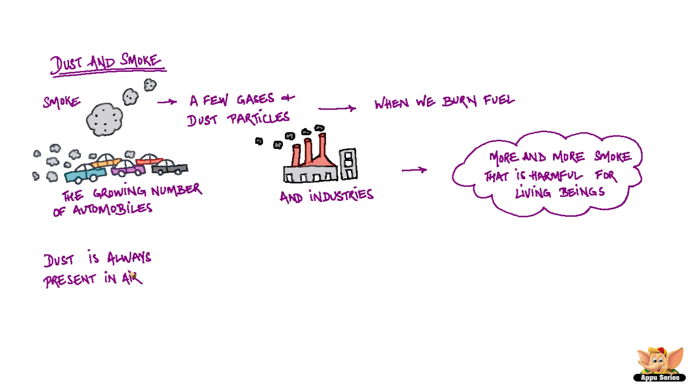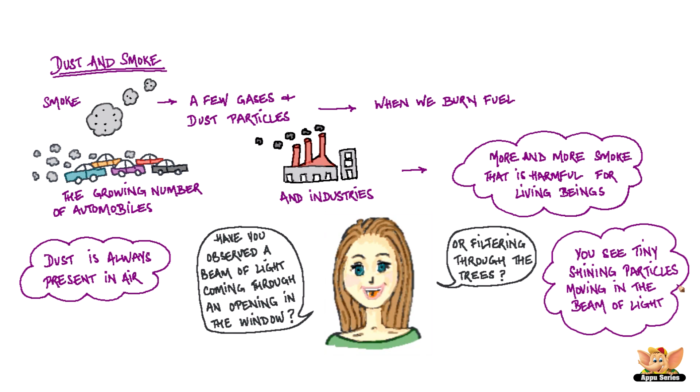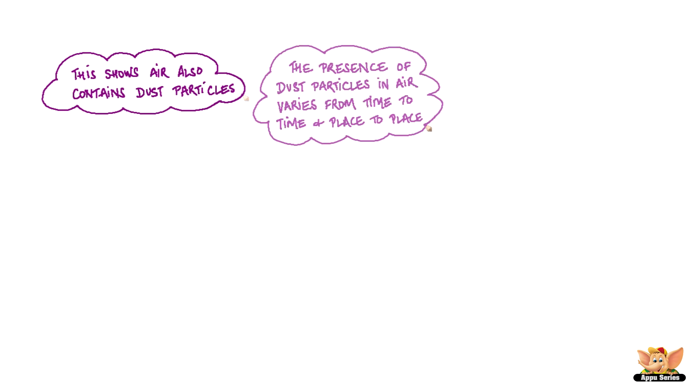Dust is always present in air. Have you observed a beam of light coming in through a small opening in the window? Or beams of light filtering through the trees? You see tiny shining particles moving in the beam of light. This shows that air also contains dust particles. The presence of dust particles in air varies from time to time and from place to place.